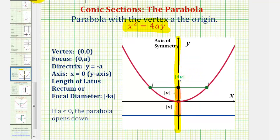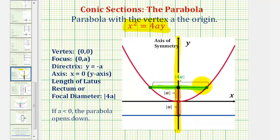This green segment is called the latus rectum or focal diameter. It has a length equal to the absolute value of 4a, and this segment is parallel to the directrix, passes through the focus, and has both endpoints on the parabola. This segment helps us make a more accurate sketch, and the focus is also the midpoint of the latus rectum.